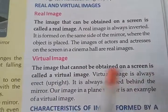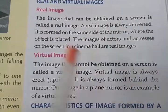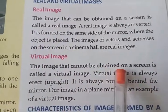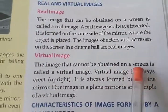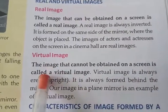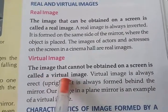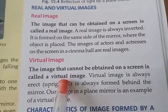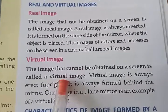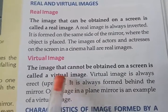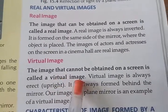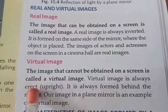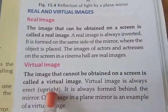The image that cannot be obtained on a screen is called a virtual image. Like when we look at our face in a plane mirror, we cannot obtain that image on a screen — that is called a virtual image. A virtual image is always erect (upright).